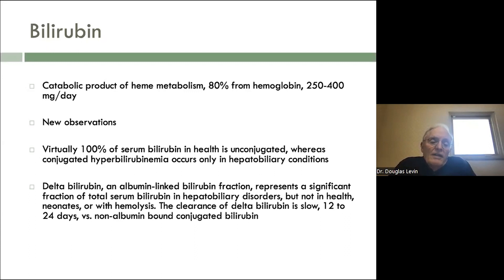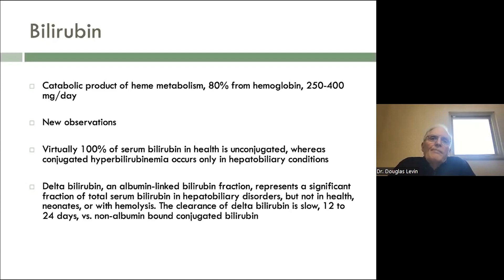One thing to know about is delta bilirubin — this is an albumin-linked bilirubin fraction representing a significant fraction of total bilirubin in hepatobiliary disorders, but not in health, not in neonates, and not with hemolysis. The clearance of delta bilirubin is slow: 12 to 24 days versus non-albumin-bound conjugated bilirubin. For example, if you have a common duct stone and your bilirubin goes up, that's resolved, yet two weeks later your patient is still jaundiced. You check urine for bilirubin — if it's negative, that's delta bilirubin. There's no active injury going on; it's just a residual of this very potent dye staining the albumin.